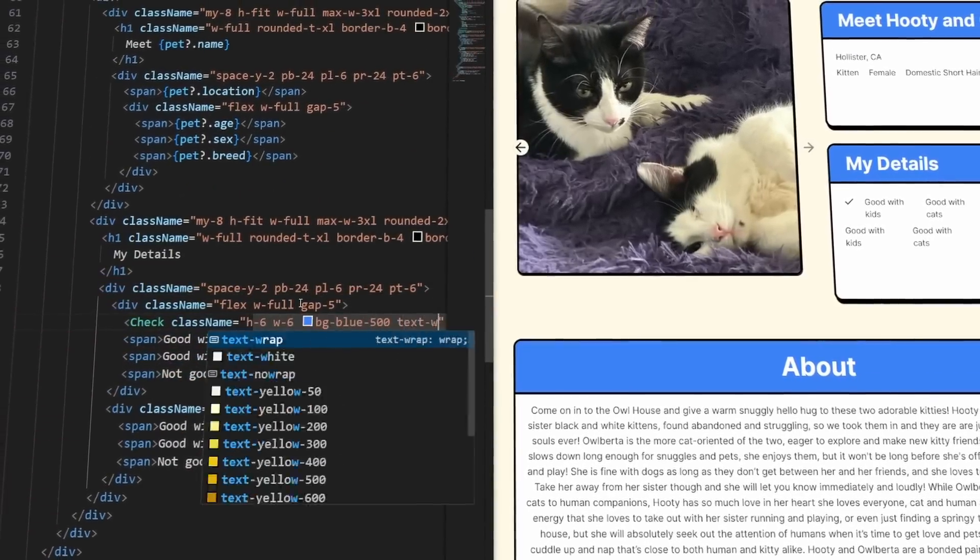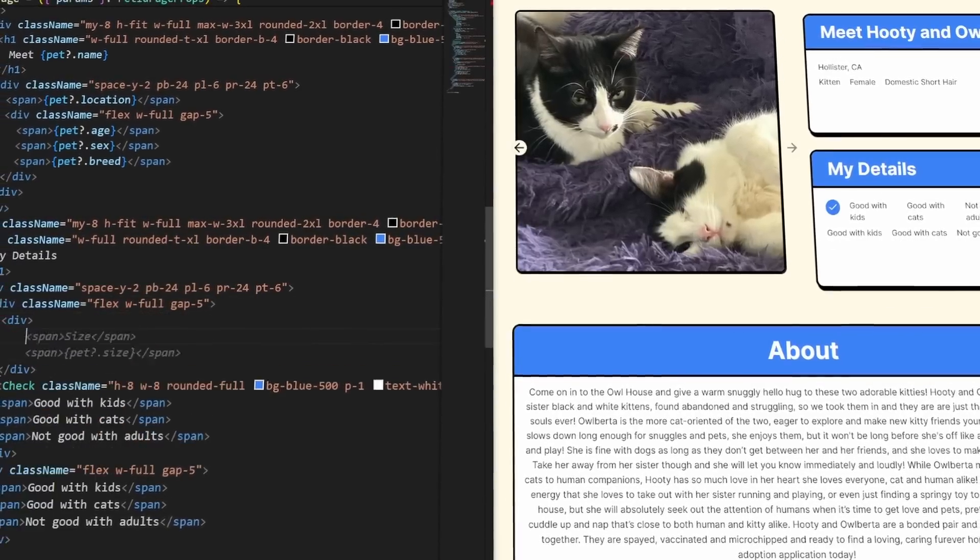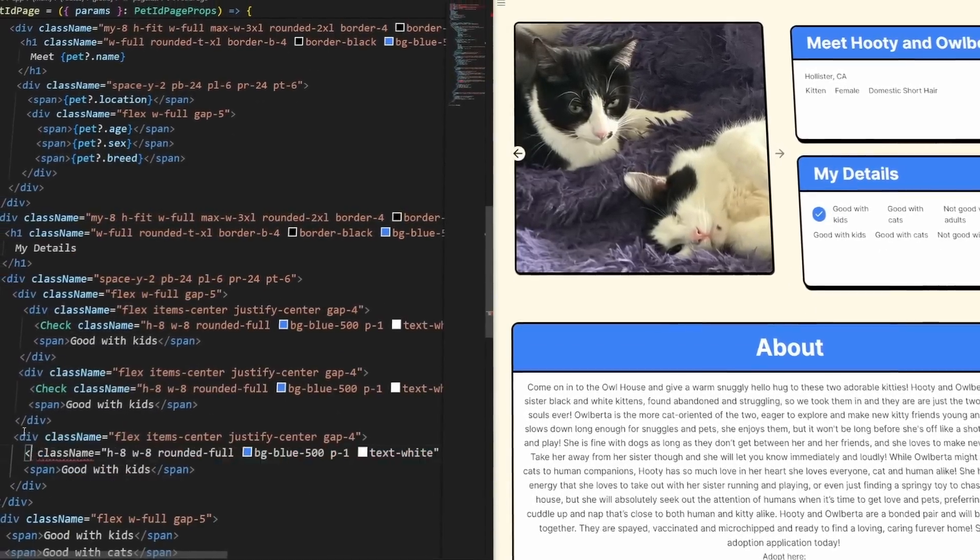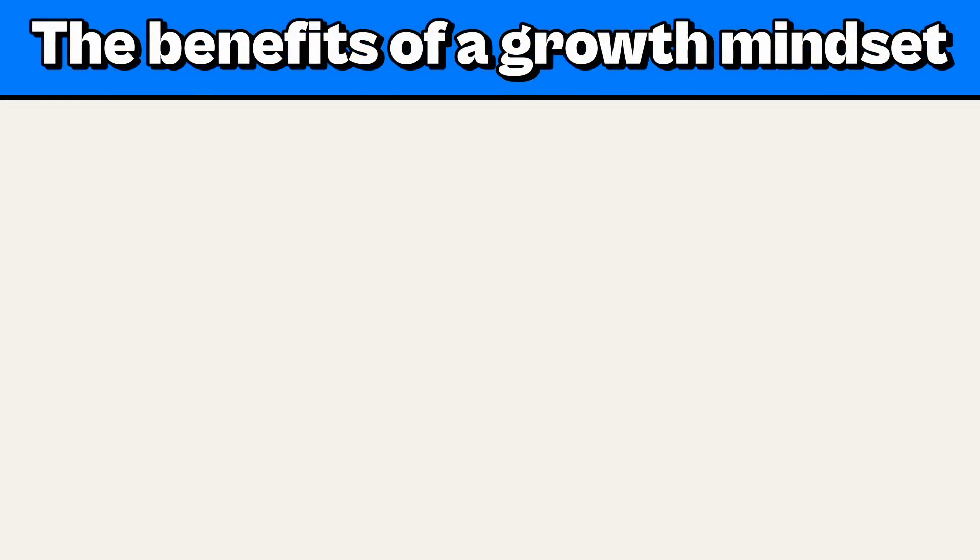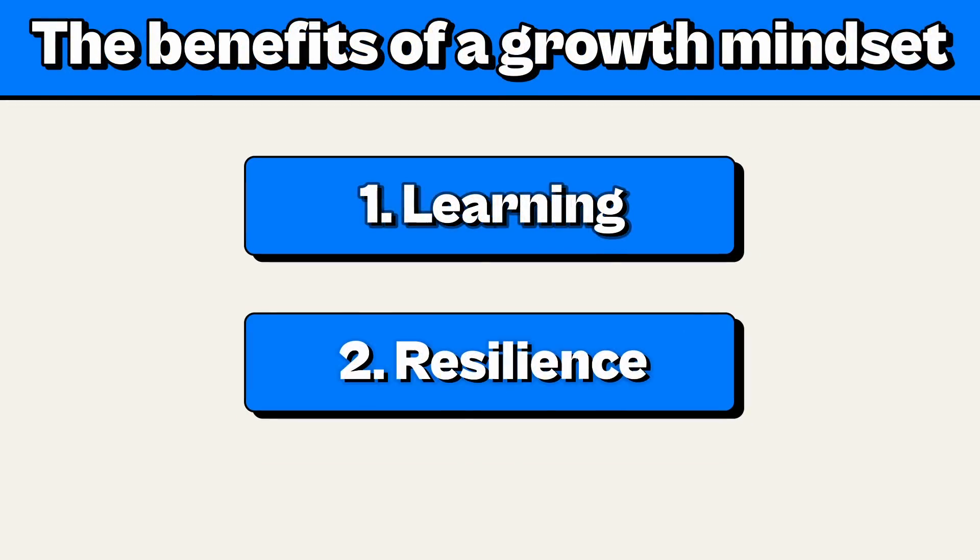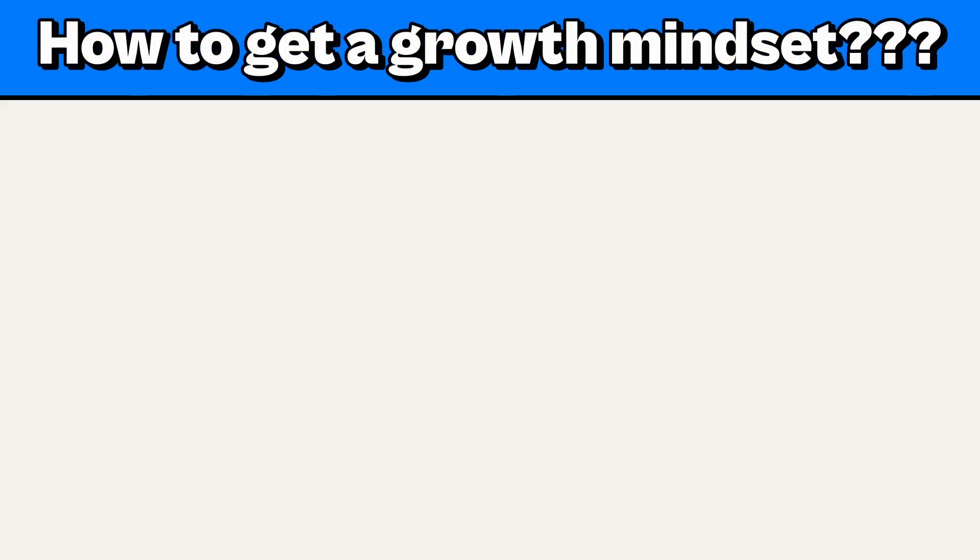If I had a fixed mindset, I probably would have quit programming a long time ago. I'll say it again: a growth mindset is all about learning and resilience. And in programming, those qualities are a must-have. But how do you develop a growth mindset? Or you're currently stuck in a fixed mindset?